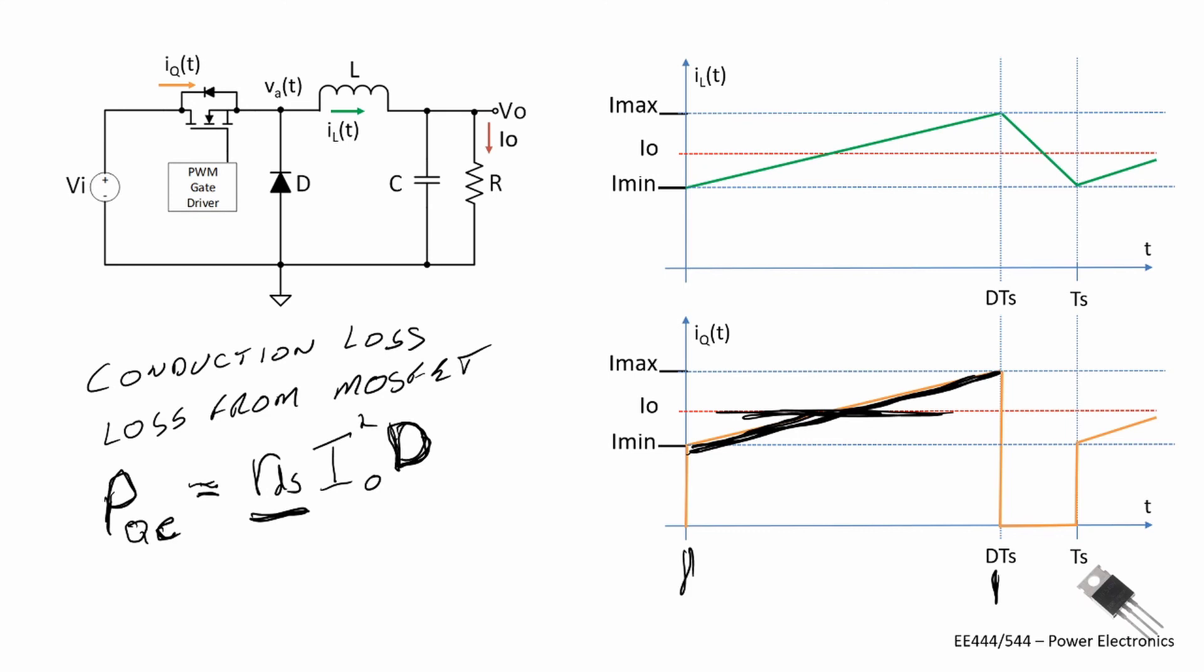So we can put all these conduction losses together. It's not the complete story yet because we still have to get the switching loss for the MOSFET. We have RDS, which is the drain to source resistance when in conduction for the MOSFET, times I0 squared times D. Plus the forward drop of our diode, whether it's a half a volt, 0.7 volts, whatever the diode you selected, times I0 times 1 minus D.